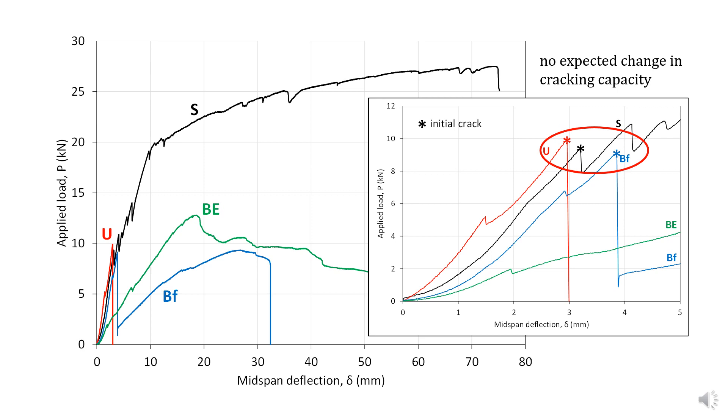The post-cracking behavior, however, is significantly different. Once cracked, the reinforcement is required to carry the tension crossing that crack. In the case of steel-reinforced concrete, the assumption of perfect bond allows the capacity to continue to increase with very little loss of stiffness until yield of the steel, and eventually we see a very long ductile plateau.